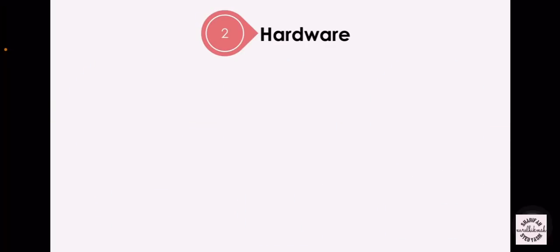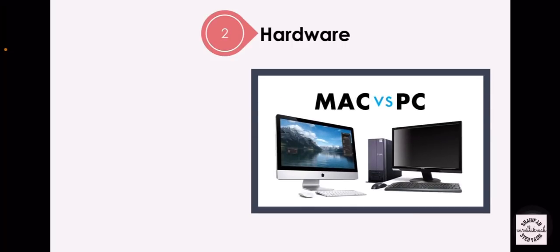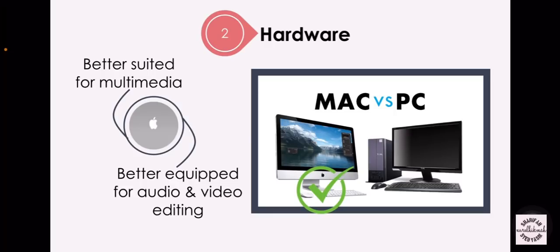The second requirement for multimedia development is hardware. Nowadays, there are two major computer hardware developers that contribute to multimedia development: Apple Macintosh and IBM PC. Both offer a combination of affordability, software, and hardware availability. However, the Macintosh platform is better suited for multimedia production than the Windows platform, because Apple hardware is better equipped to manage both sound and video editing.